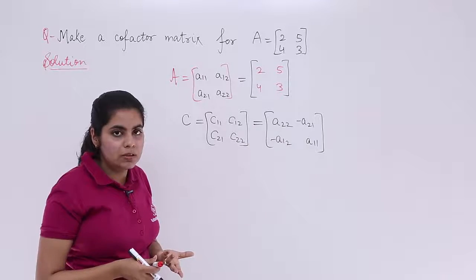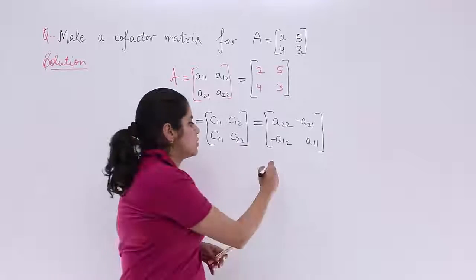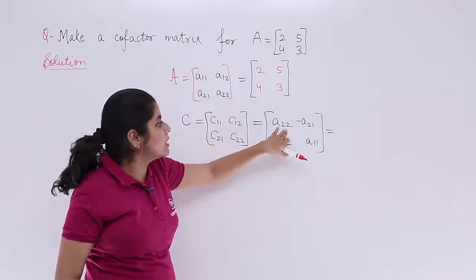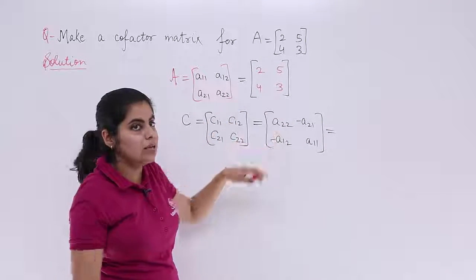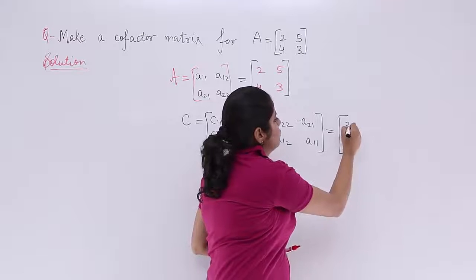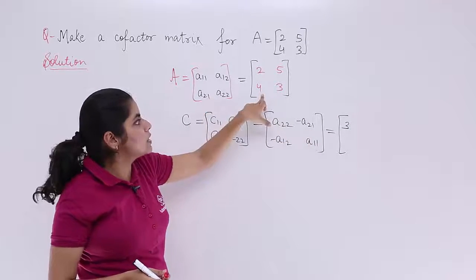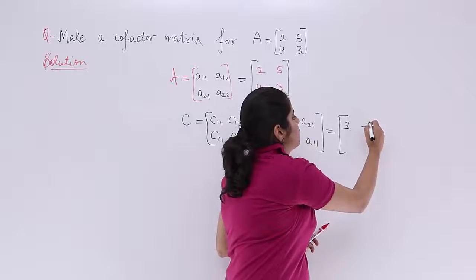Now, this is what the answer should have been and it is the answer. Just one thing is to be done. You have to write what these values are. What is A22? A22 is 3, so it is 3. What is minus A21? A21 is 4, minus 4 should be there.